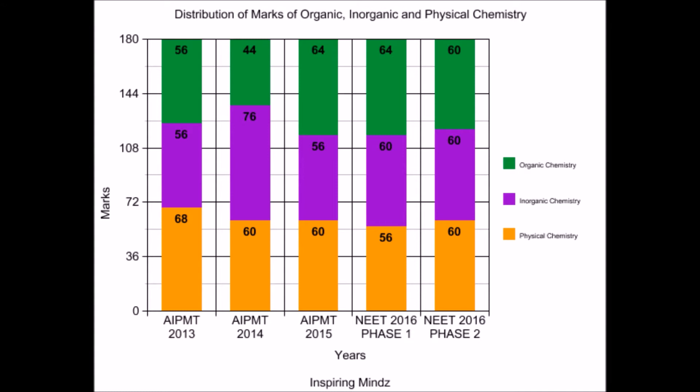In AIPMT 2015, the weightage for organic chemistry was 64 marks, the weightage for inorganic chemistry was 56 marks, and the weightage for physical chemistry was 60 marks. In NEET 2016 phase 1, the weightage for organic chemistry was 64 marks, for inorganic chemistry it was 60 marks, and for physical chemistry it was 56 marks.